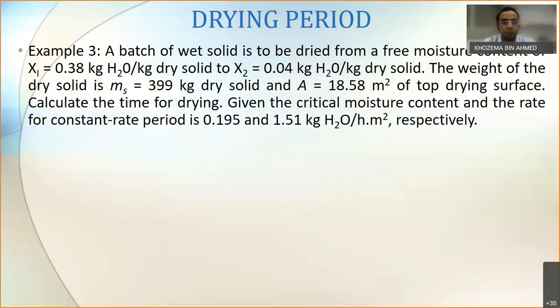Given the critical moisture content and the rate for the constant rate period is 0.195 and 1.51 respectively. So by writing the values, X1 equals 0.38, X2 the final moisture content after drying equals 0.04, and the value of Xc is equal to 0.195. So here the condition is X2 is smaller than Xc.